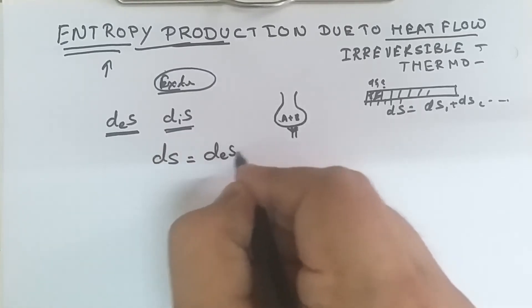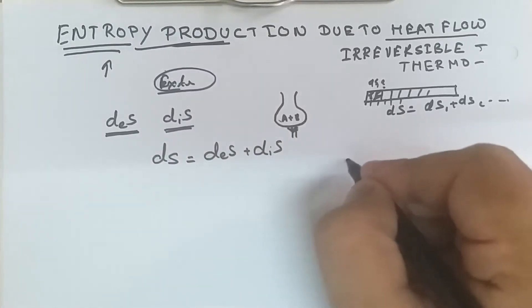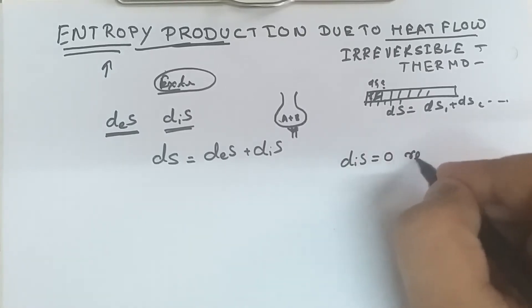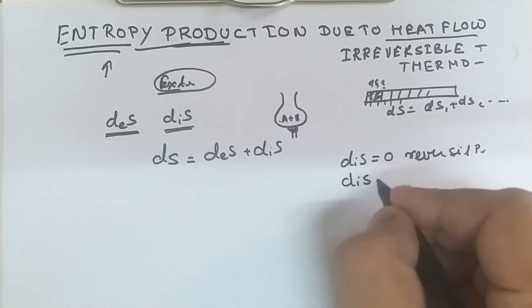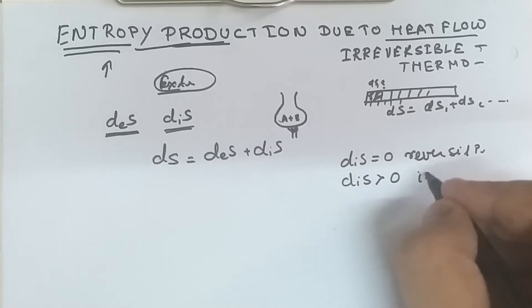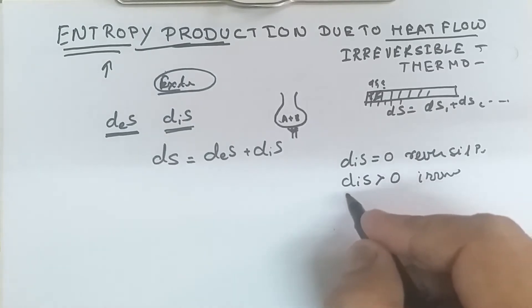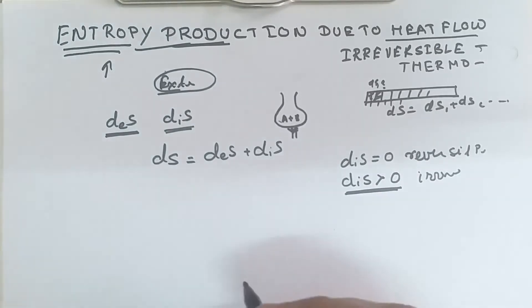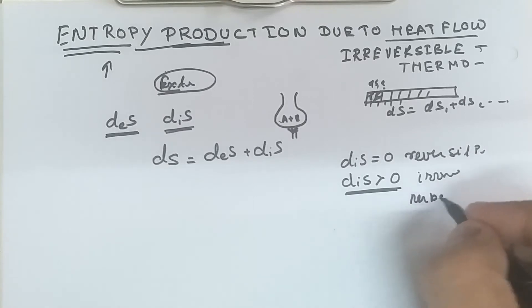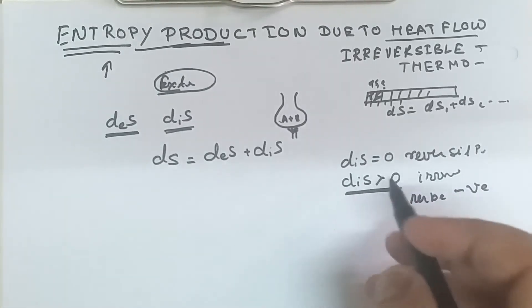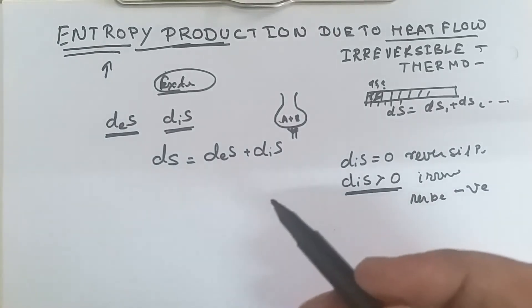The total entropy dS equals deS plus diS. Here, diS equals zero for a reversible process, and diS is always greater than zero for an irreversible process. Furthermore, this quantity — diS — can never be negative. This diS is our entropy production.